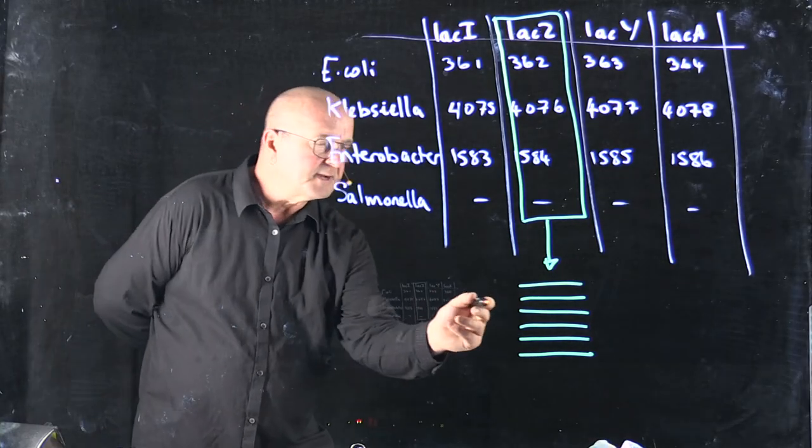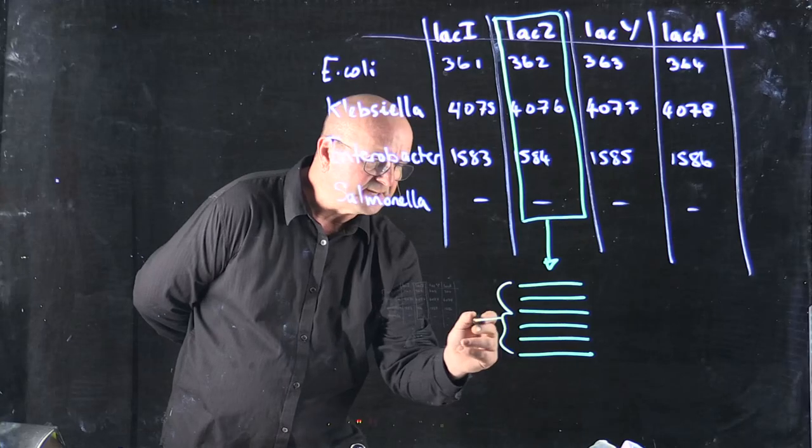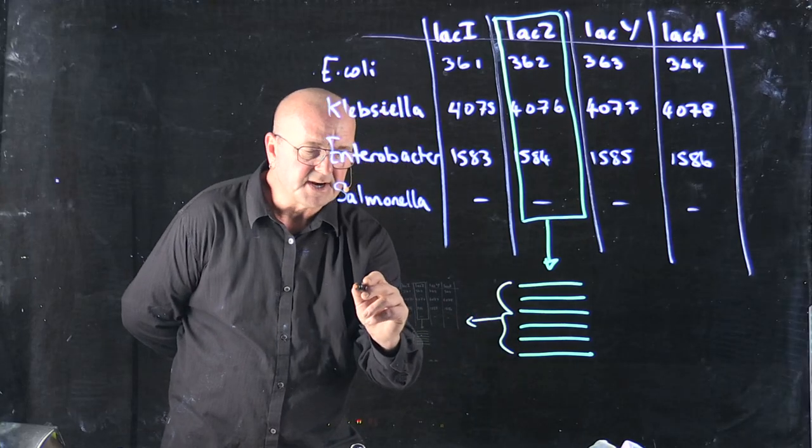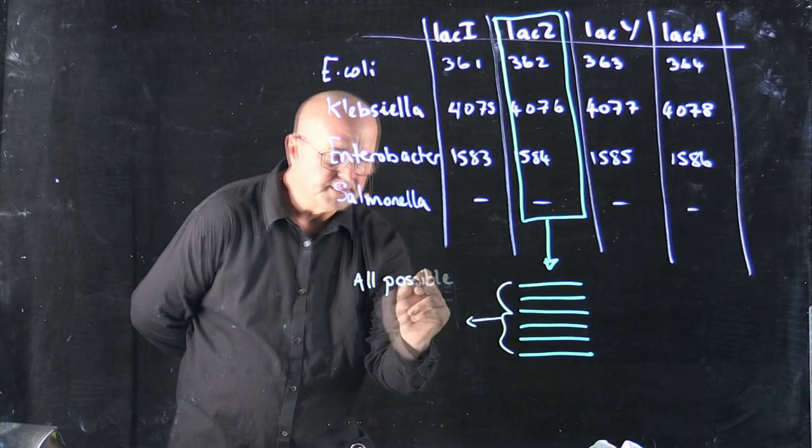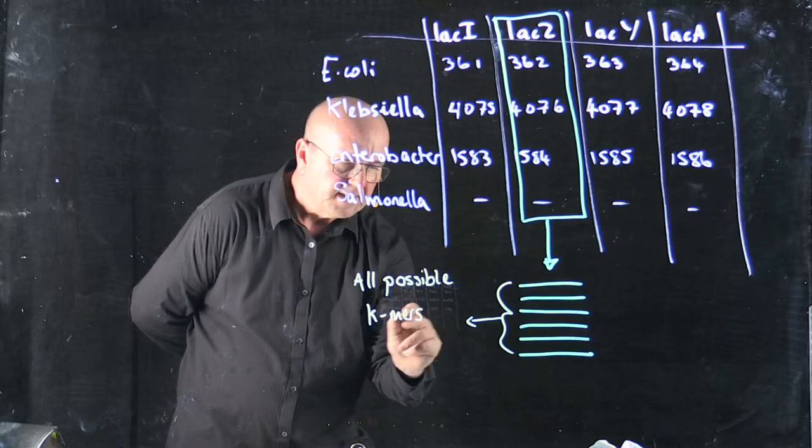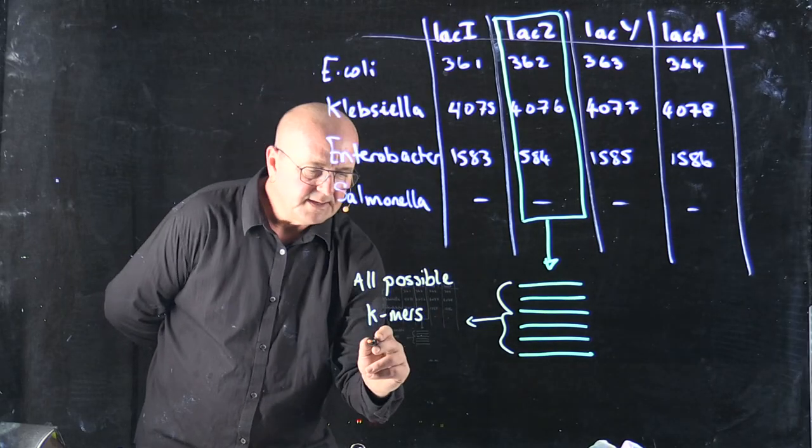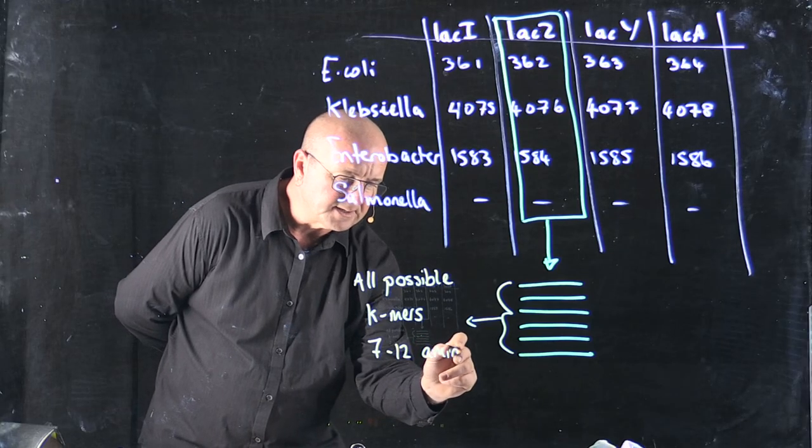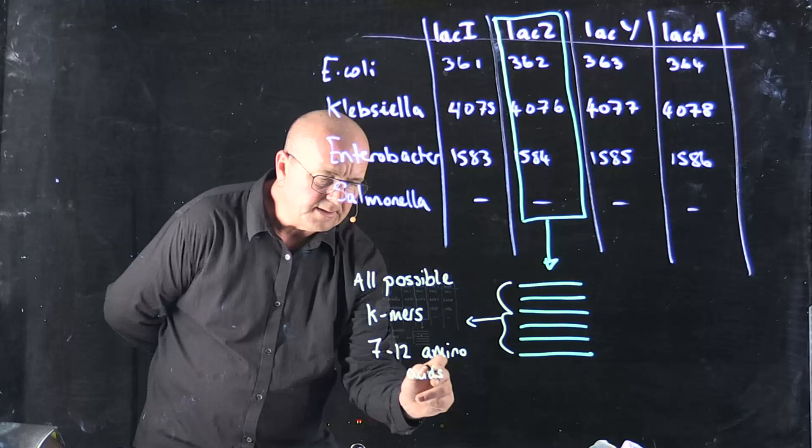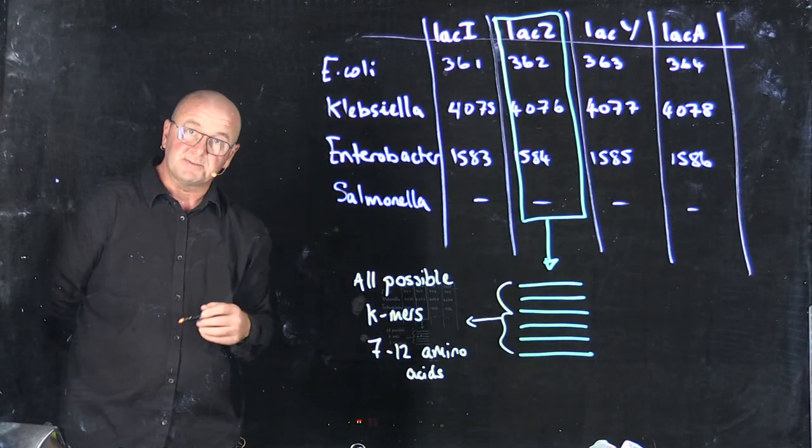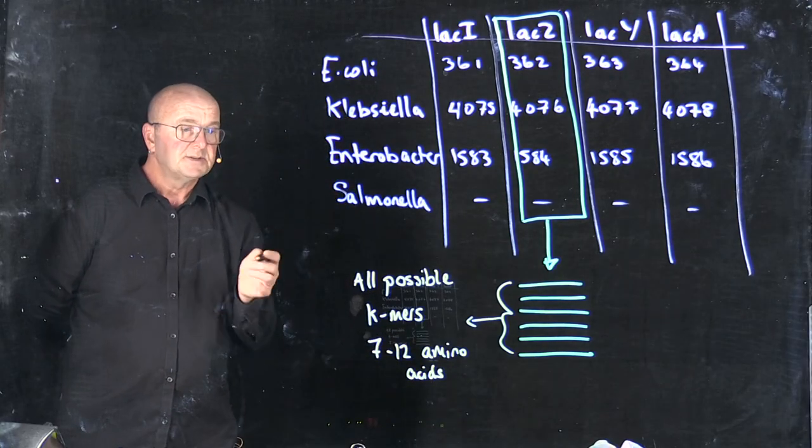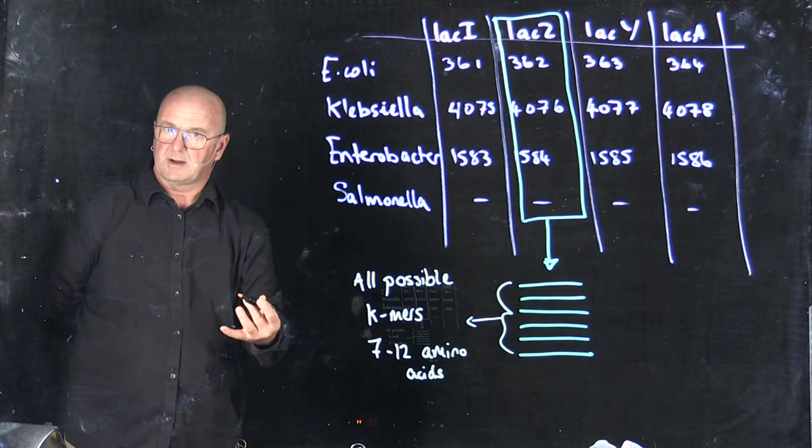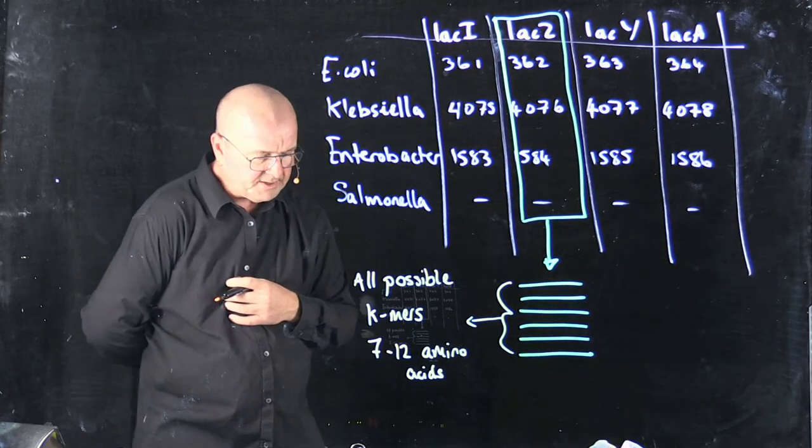Now what we're going to do is extract from these protein sequences all possible K-mers. And our K here is typically from 7 to 12 amino acids. Now remember, with amino acids we've got 20 possibilities, so that ends up being quite a big collection of K-mers.